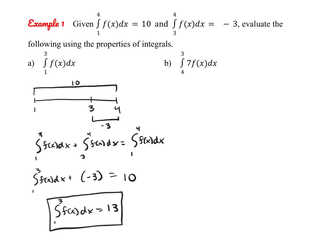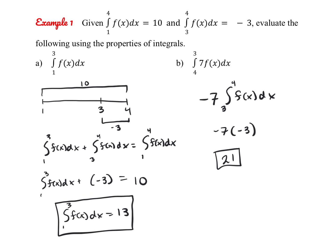For the last part, we have the integral from 4 to 3 of 7·f(x). The lower boundary is higher than the upper boundary, so we flip it by placing a negative out front. We also pull the constant out: negative 7 times the integral from 3 to 4 of f(x) dx. That integral equals −3, so we have negative 7 times negative 3, which is positive 21.